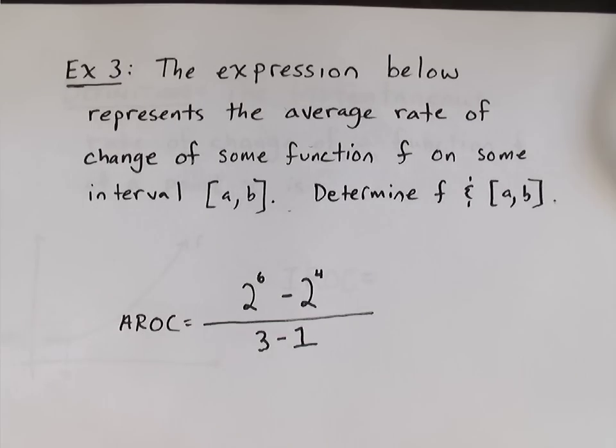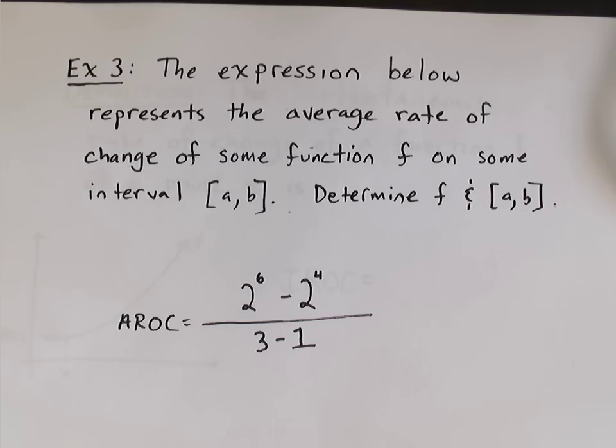Another example. This one's a little different. It says, the expression below represents the average rate of change of some function f on some interval from a to b. And we're asked to determine f, the function, and the interval [a,b].